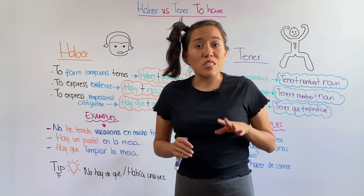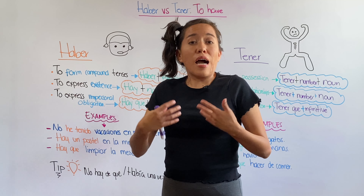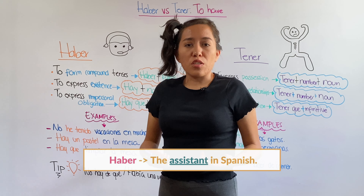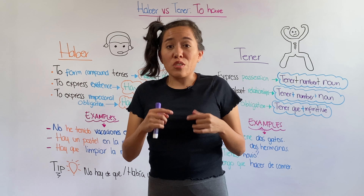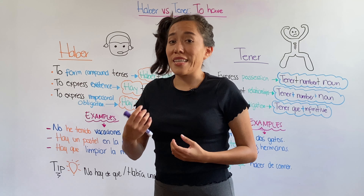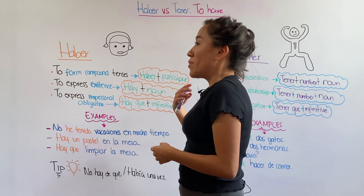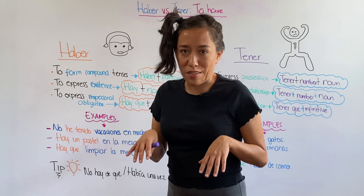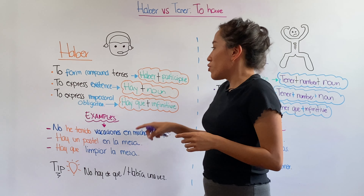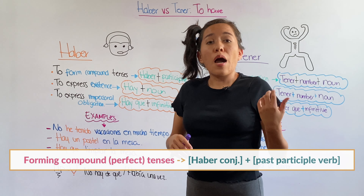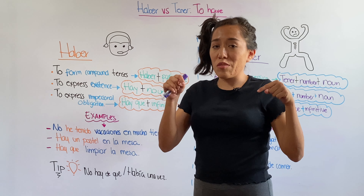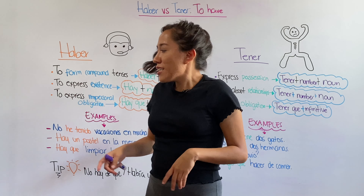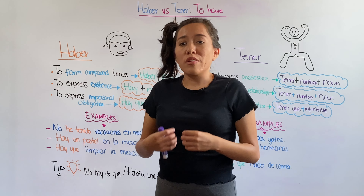When you think about haber, you're going to think about an assistant. Haber is your assistant in Spanish. This means you are going to use this verb to form compound tenses — it's going to help you build the present perfect, the past perfect, and everything that finishes with 'perfect tense.' To do this, you use haber plus a verb in participle form. As an assistant, haber also helps you express existence.